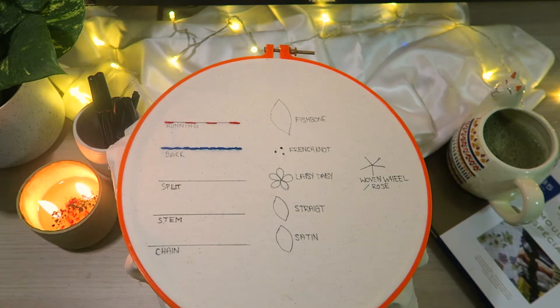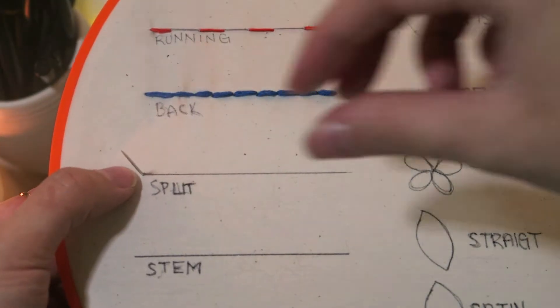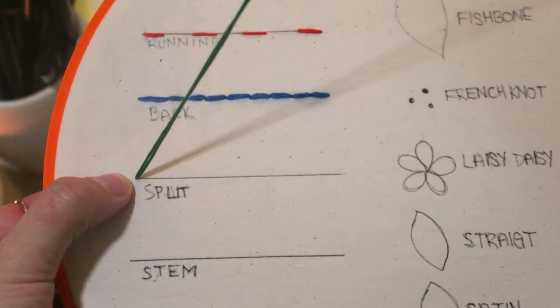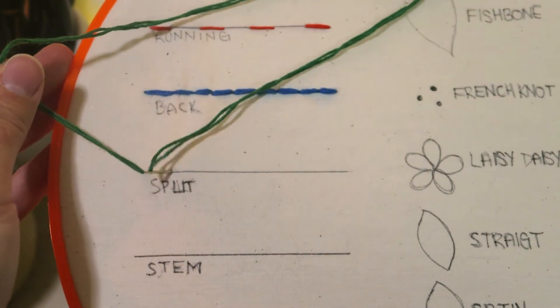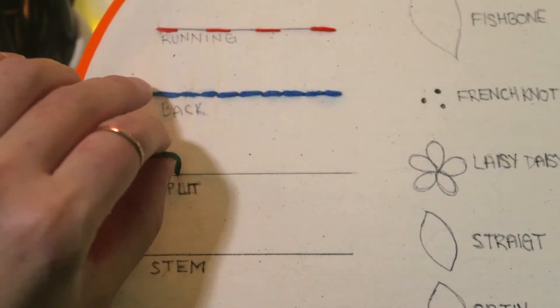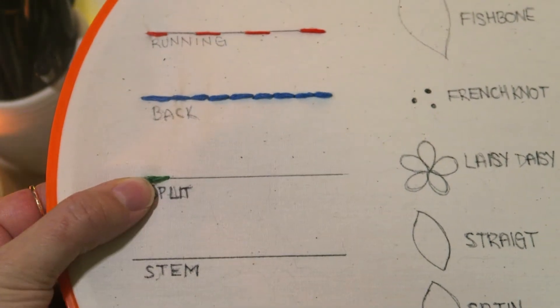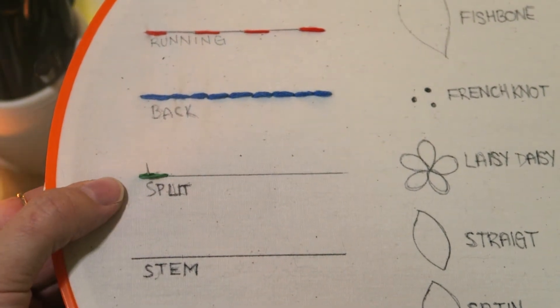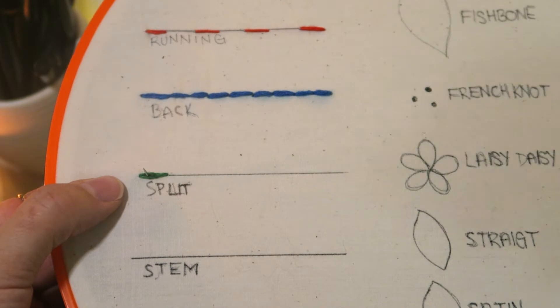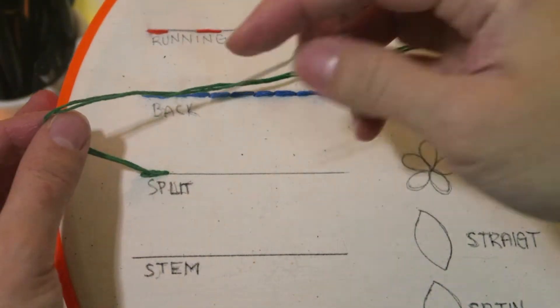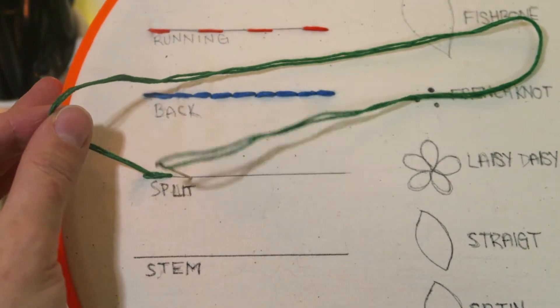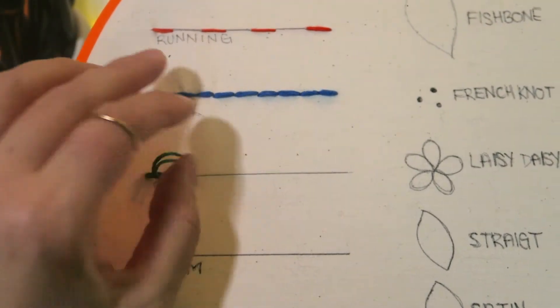Our third stitch is the split stitch. Start at the back of the hoop and pull the needle and thread all the way through to the front, and then do another stitch to the back from the top of the fabric. When you come to the front again you want to start halfway between your previous stitch. You want your needle to split the thread strands as you can see here. About a stitch length away complete the stitch by threading your needle to the back from the top of the fabric.